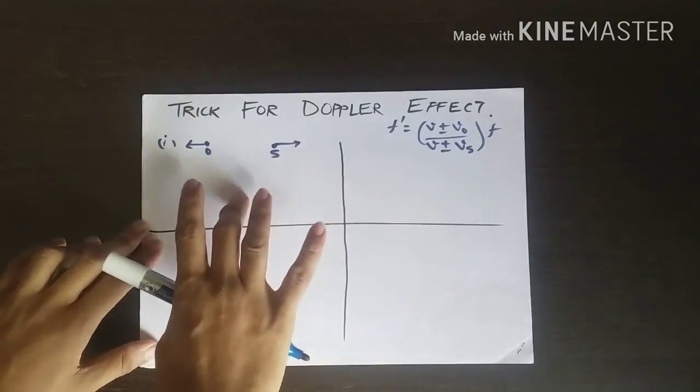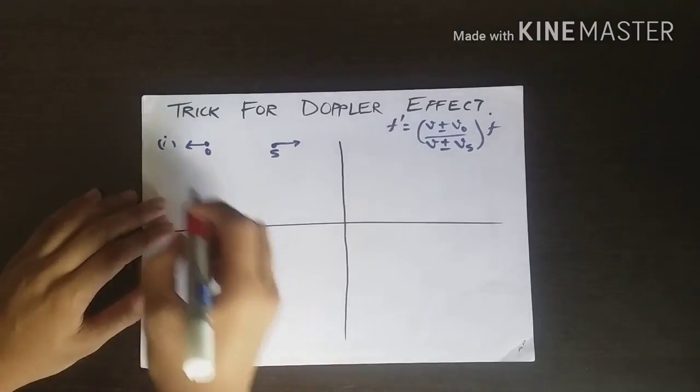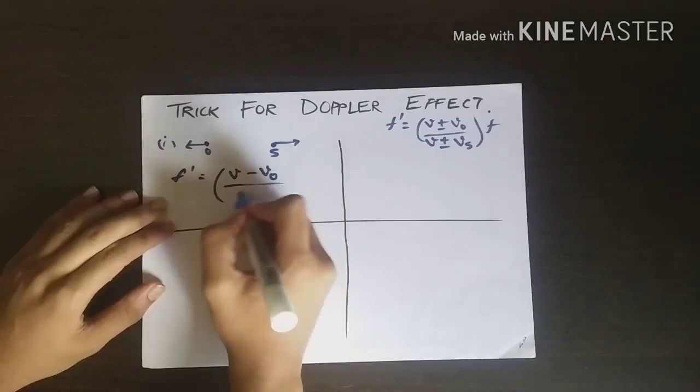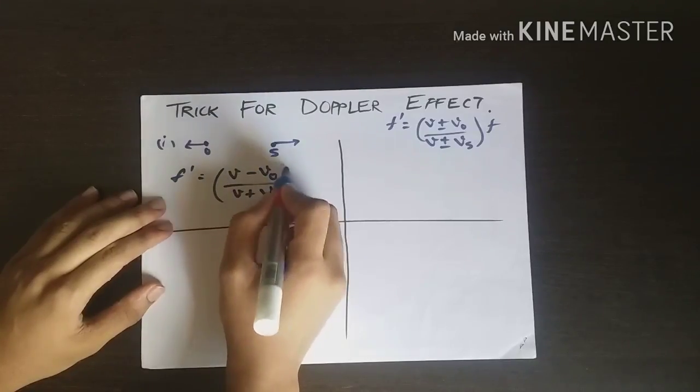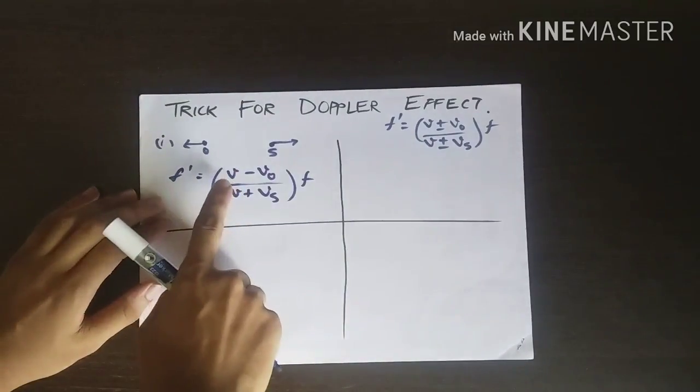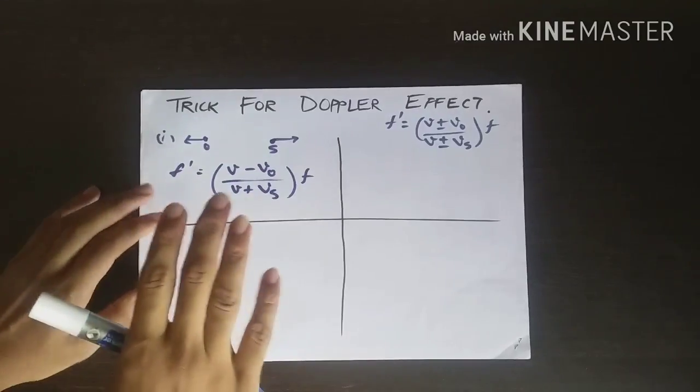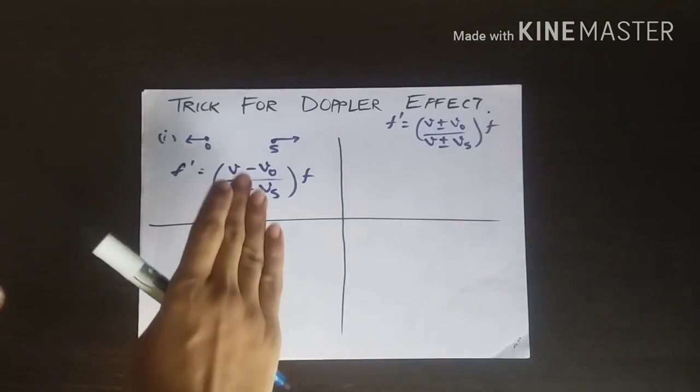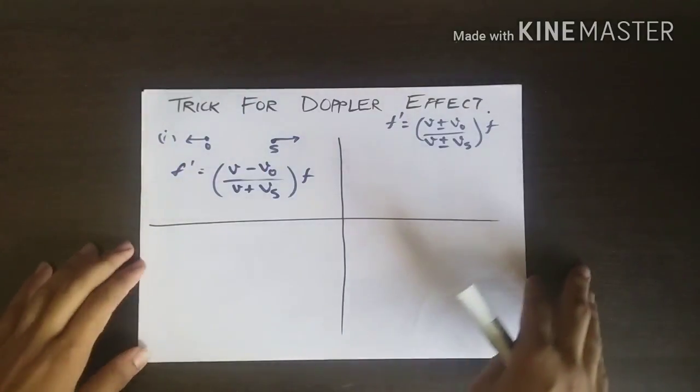F' = (V - V₀)/(V + Vₛ) × F. Clearly, we are making the numerator the least and denominator the most, so this becomes as minimum as possible.